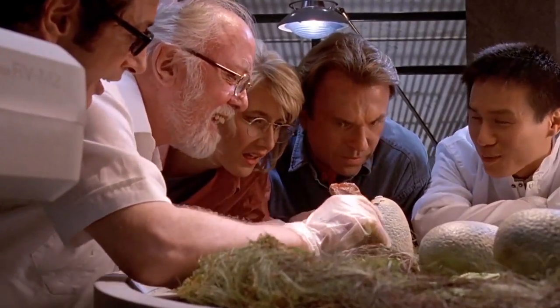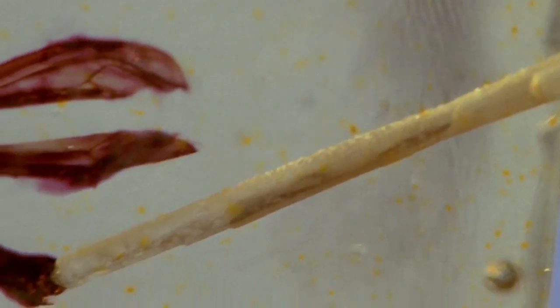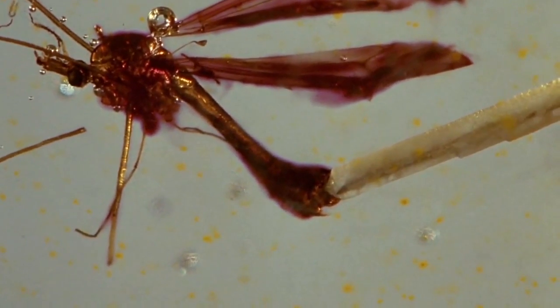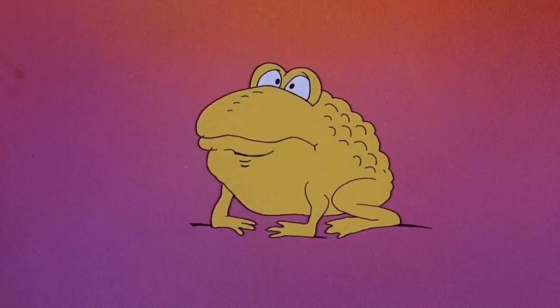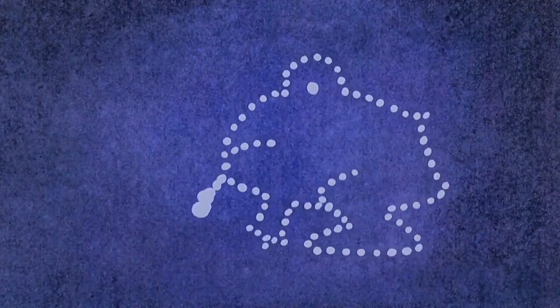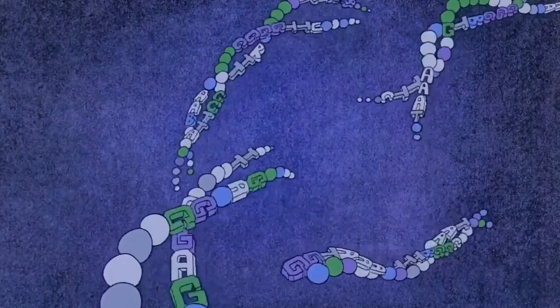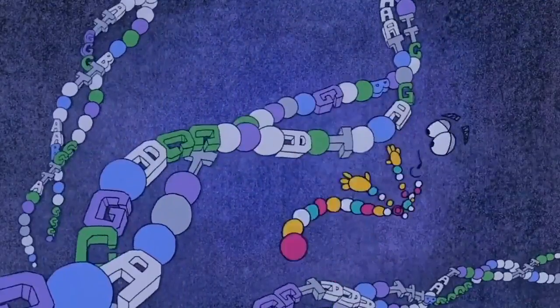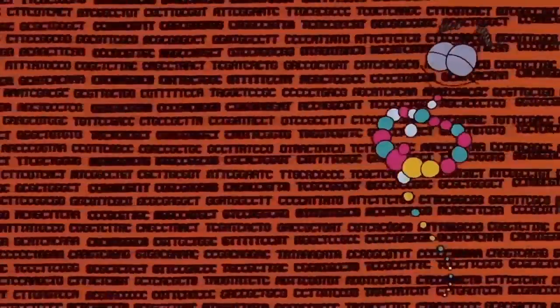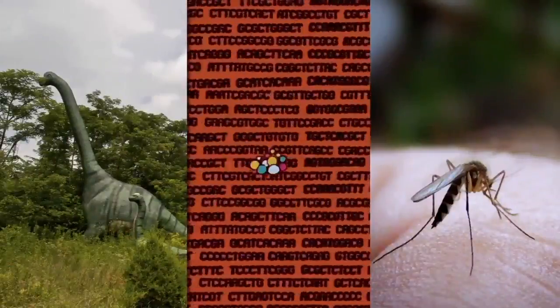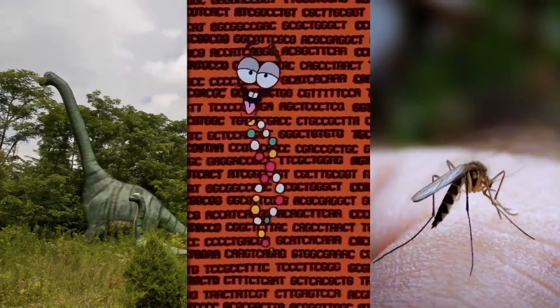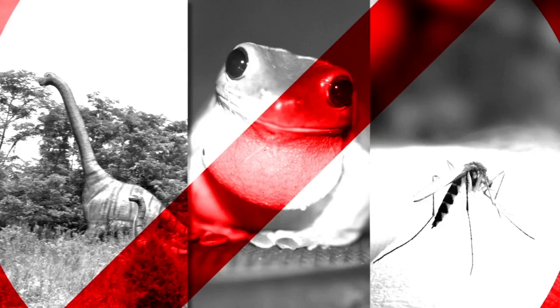Unfortunately, this won't work in real life. For one thing, the DNA is scrambled in a mosquito's gut and incomplete. In the movie, they wave this away, saying that they fill the gaps with frog DNA. But this won't work either. The DNA is mixed up with the insect's DNA, and you can't just use some other species to fill in the gaps.